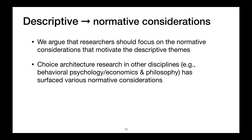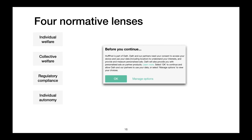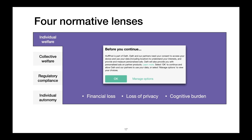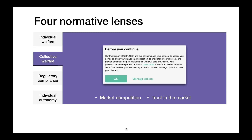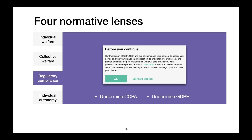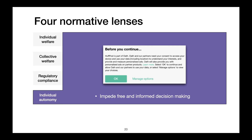Choice architecture research in other disciplines has already done this, and we do this here for the dark patterns literature. We describe four normative lenses that can help us examine dark patterns. For example, consider this cookie banner, which is designed to induce users to allow tracking cookies. Under the individual consumer welfare lens, we might consider the user interface a dark pattern because it benefits marketplace incumbents who can aggregate and leverage a large volume of personal data, leading to reduced market competition. Under the regulatory compliance lens, we might consider it a dark pattern because it frustrates or violates the purposes of the GDPR. Finally, under the individual autonomy lens, we might consider it a dark pattern because users may be unaware of the choices available to them, thus depriving them of autonomy in their decision making.